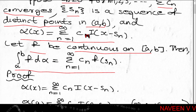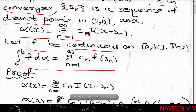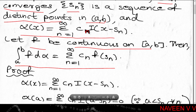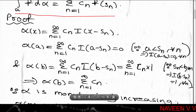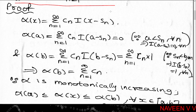Define α(x) = Σ(n=1 to ∞) cₙ · I(x - sₙ), where I(x - sₙ) = 0 if x ≤ sₙ, and I(x - sₙ) = 1 if x > sₙ. The function I(x - sₙ) is a unit step function. Then α on [a,b] is monotonically increasing.